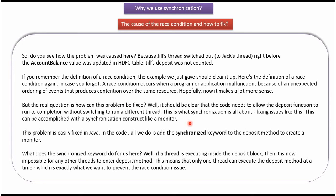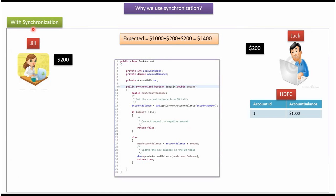If we are not using synchronization, a race condition will occur. To fix the race condition, we have to use synchronization. Now we will see how, with synchronization, the race condition problem is solved.